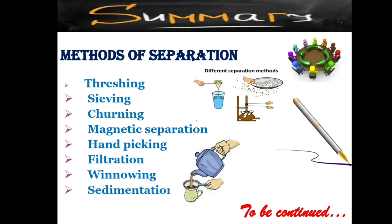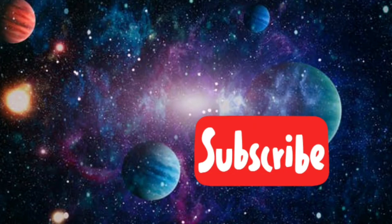Sedimentation — if we take a mixture of sand and water, the sand takes some time to settle down; the settling of heavier particles is called sedimentation. Decantation — the process which happens after sedimentation, where liquid is poured out without disturbing the mud or sand. These are the different methods of separation with examples. Hope everyone understood. One more part of unit 3 is to be continued. Please like, share and subscribe. Thanks for watching.